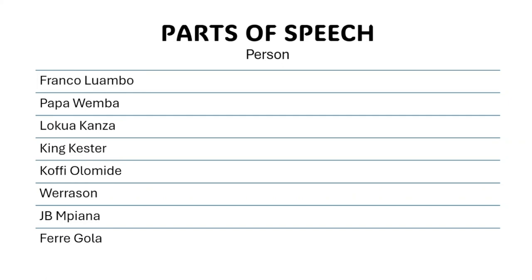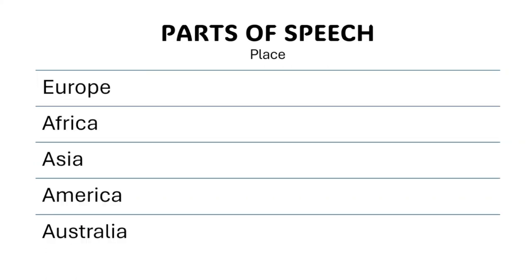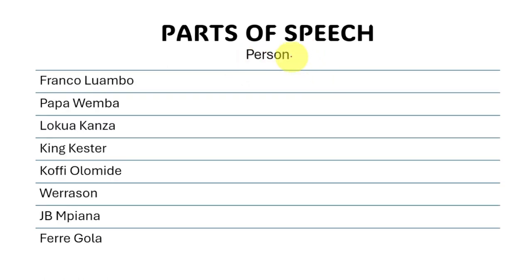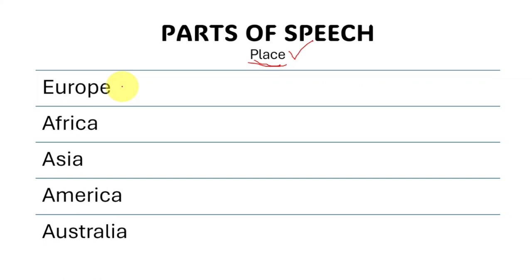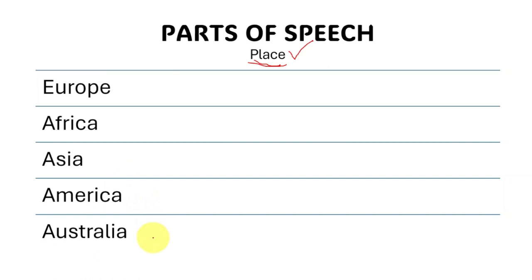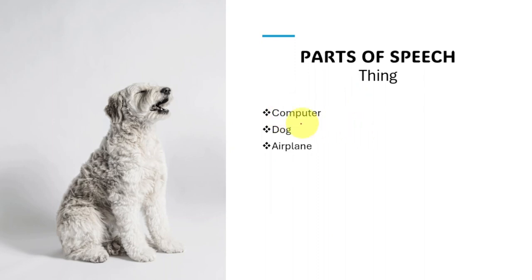We got Franco Luambo, Papa Wemba, Kofi Olomide, Werrason — we talk about person or people. Now we have the place: Europe, Africa, Asia, America, Australia, Israel, Congo, Egypt. And the things: computer, dogs, airplanes.